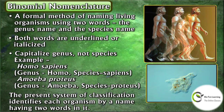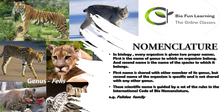The Linnaean binomial system gives a two-word naming system to an organism. The first name represents genus and the second name represents species. For example, Homo sapiens — here Homo is genus and sapiens is species. Similarly, Amoeba proteus — Amoeba is genus and proteus is species. The genus name is followed by species name. The first letter of the genus name is always capitalized, but the first letter of the species name is never capitalized. Both words are underlined or italicized. The first name is shared with other members of its genus, but the second name is specific and not shared with any other genus. These scientific names are guided by a set of rules in the International Code of Biological Nomenclature.